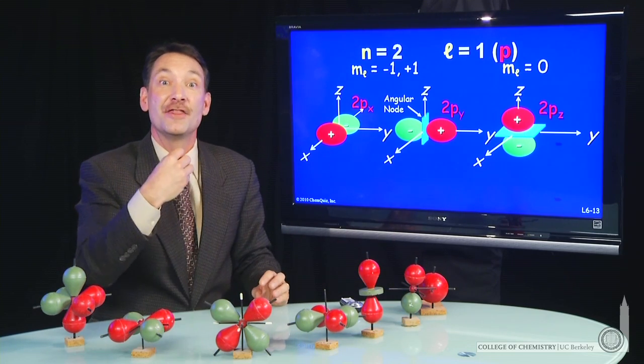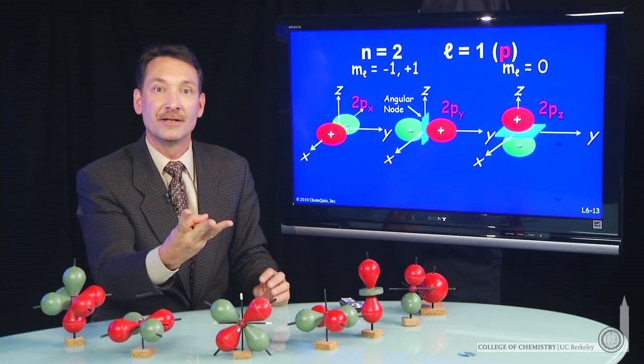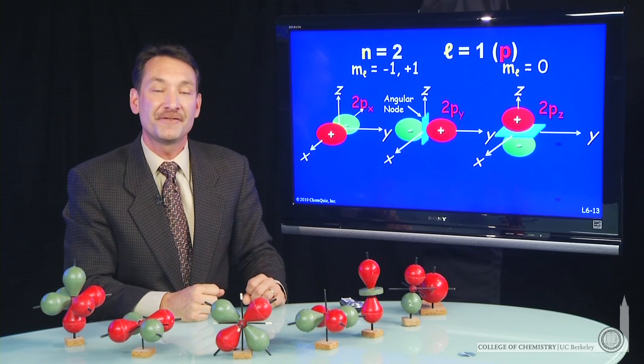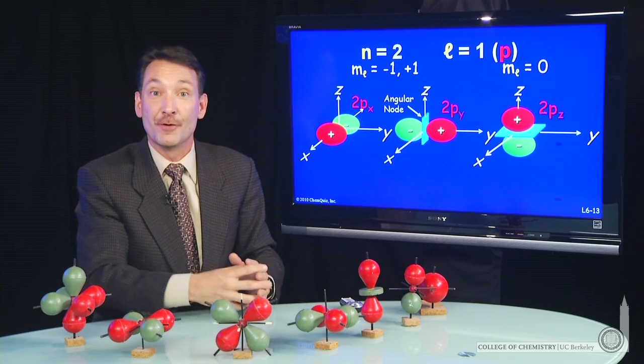We're kind of giving three designations, an n, an l, and an m sub l to define a wave function. And that defines the orbital that we're talking about. These are the p orbitals.